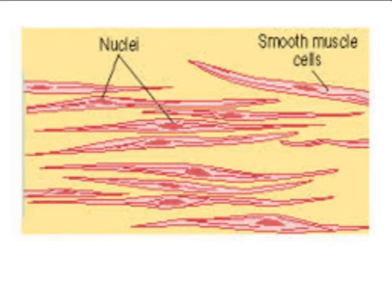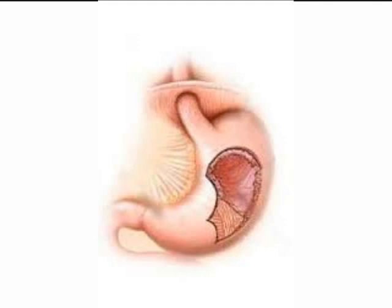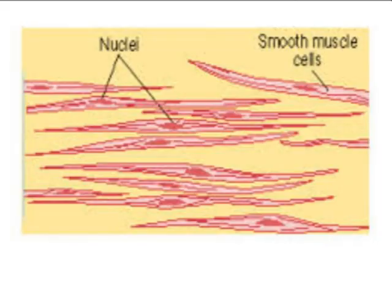Smooth muscles are found on the walls of tubular visceral organs. They include the blood vessels, the gut, urinary tract, reproductive tract and the respiratory tract. The cells which make up smooth muscles are spindle-shaped, each with a single nucleus. They contain myofibrils enclosed by plasma membrane. They lack striations and hence are referred to as smooth muscles. Smooth muscles are capable of slow involuntary contractions. They are innervated by the autonomic part of the nervous system and are therefore called involuntary muscles. They are capable of contracting slowly and fatigue slowly, unlike the skeletal muscles.